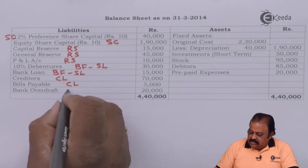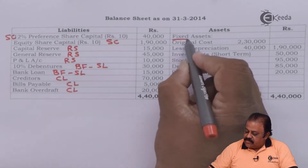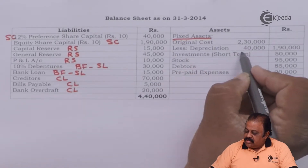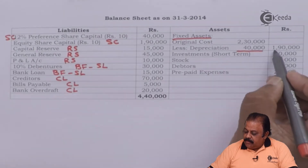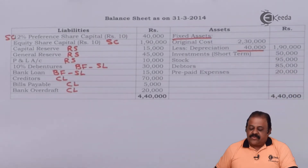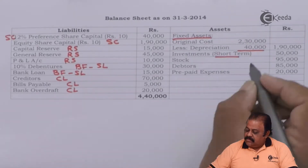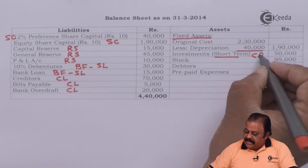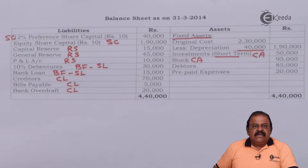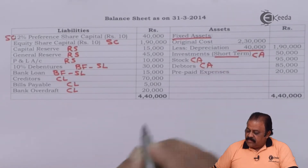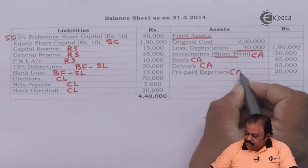Creditors and bills payable are current liabilities. Bank overdraft is also a current liability. Fixed assets have an original cost of 2 lakh 30,000, minus provision for depreciation of 40,000, giving a written-down value of 1 lakh 90,000. Investments are short-term and classified as current assets. Debtors and prepaid expenses are also current assets.